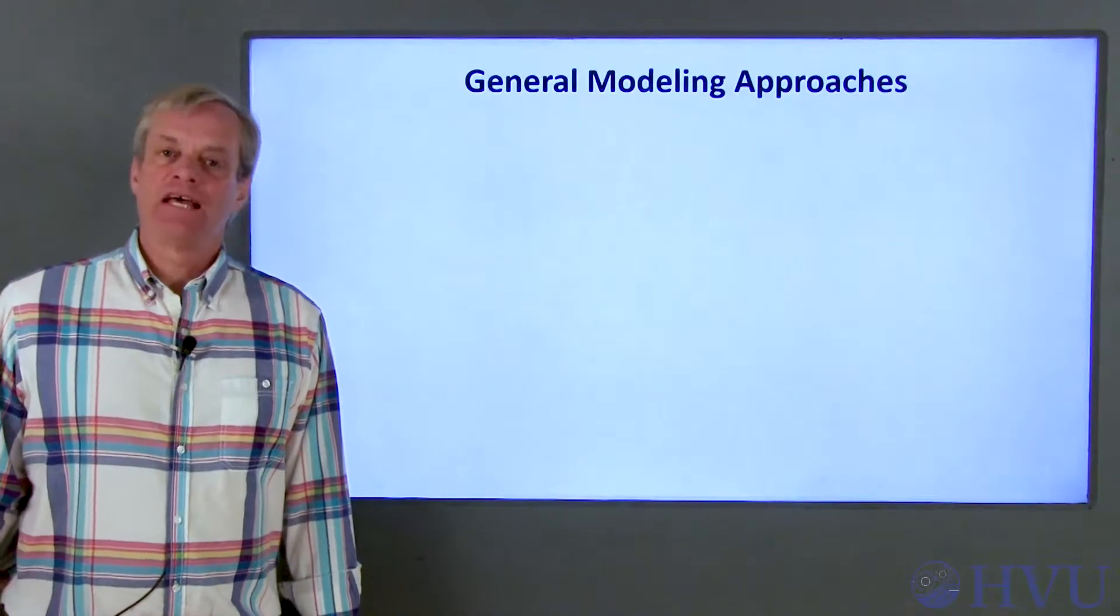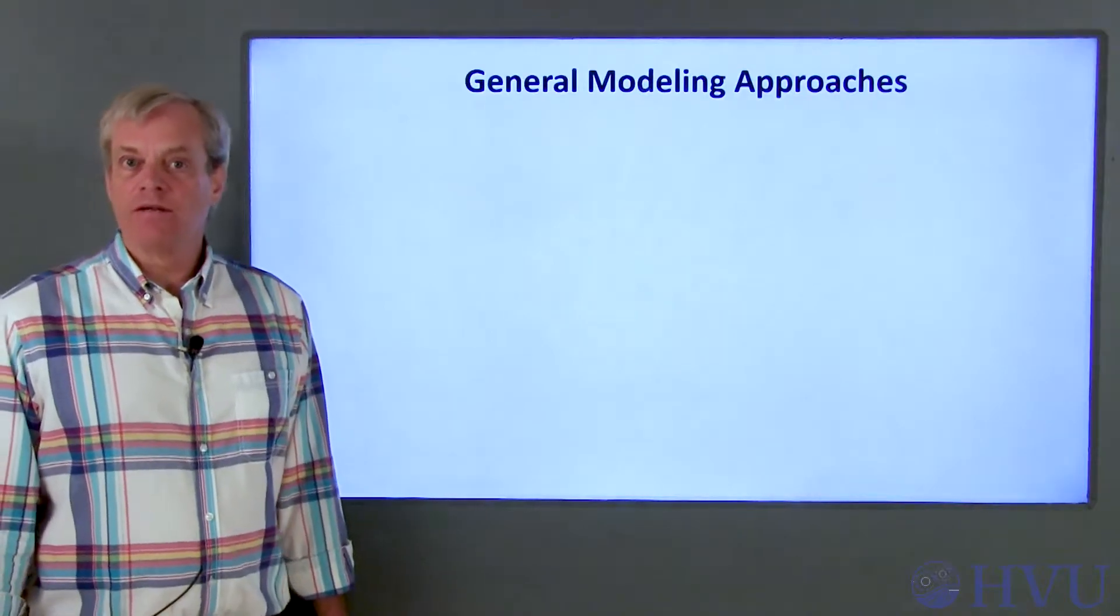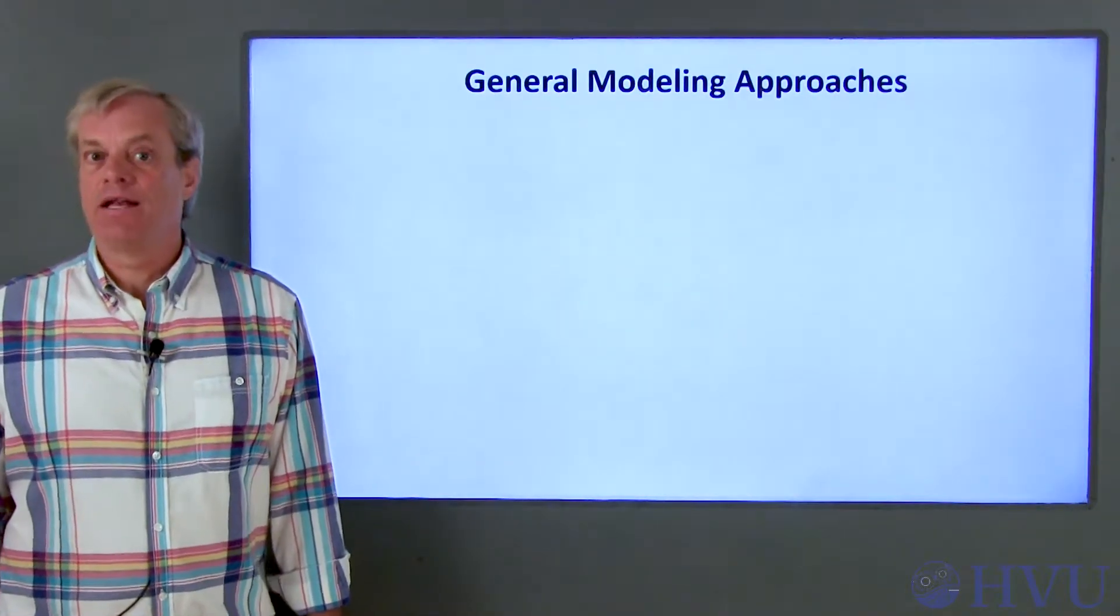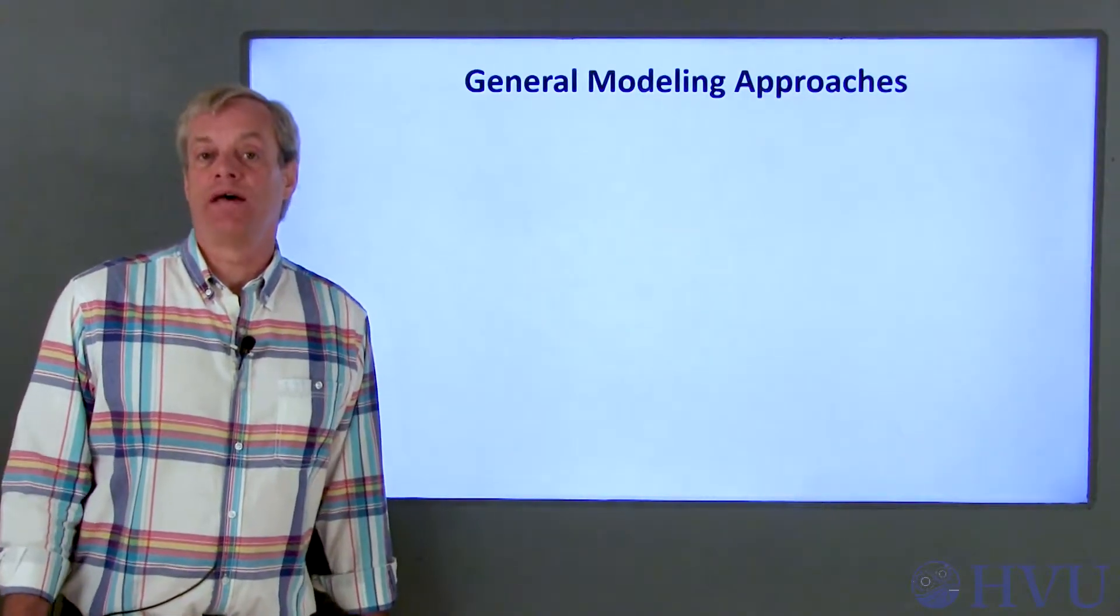There's a lot of latitude in how an engineer might model a system. A standard joke is that if you get five engineers to model a system, you'll get five different models. Of course, if I'm one of the engineers, you'll probably get at least six different models because I'll want to do the problem more than one way. Now let's talk about some of the types of models we might want to create, what physical processes they model, and the mathematics used in the models themselves.